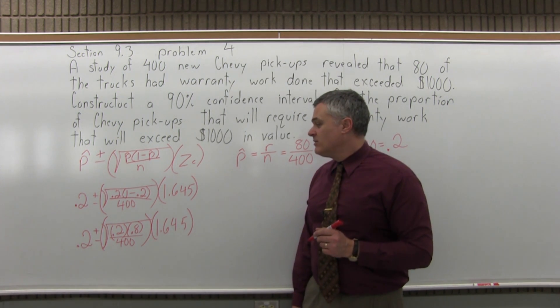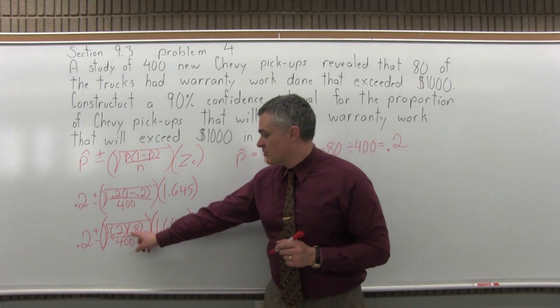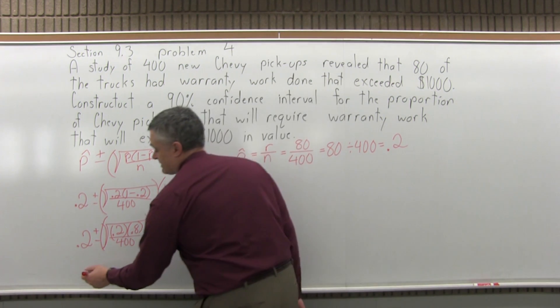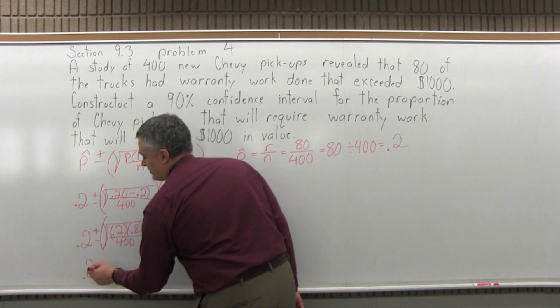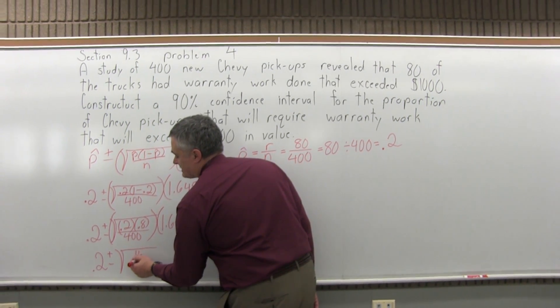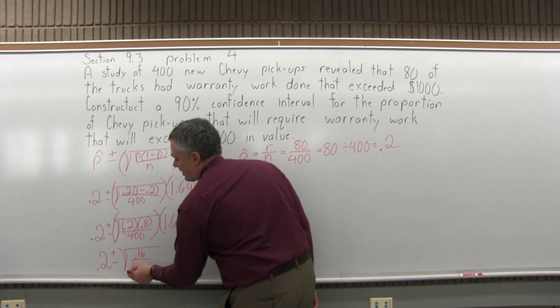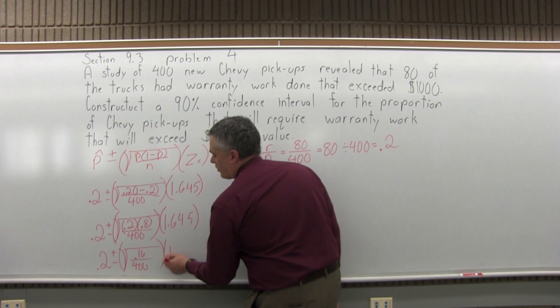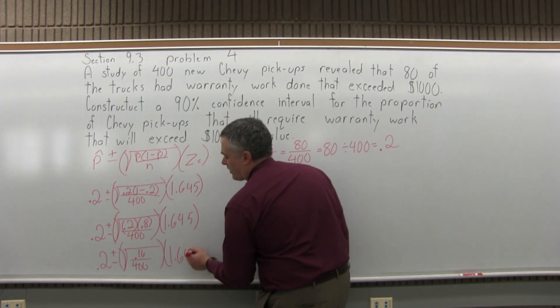So now if I multiply the numerator under my square root 0.2 times 0.8, it'll be 0.16. So that'll give me 0.2 plus or minus the square root of 0.16 over 400 times 1.645.